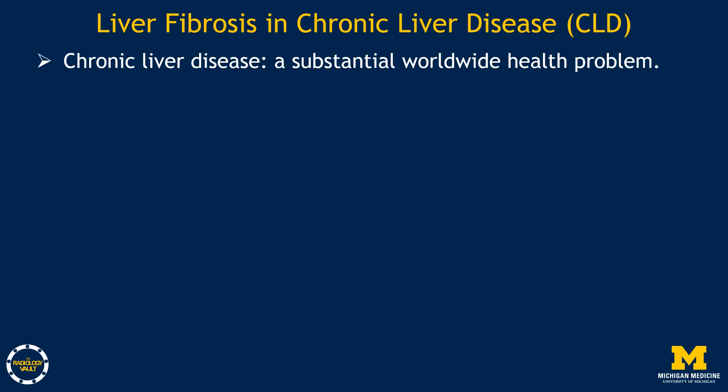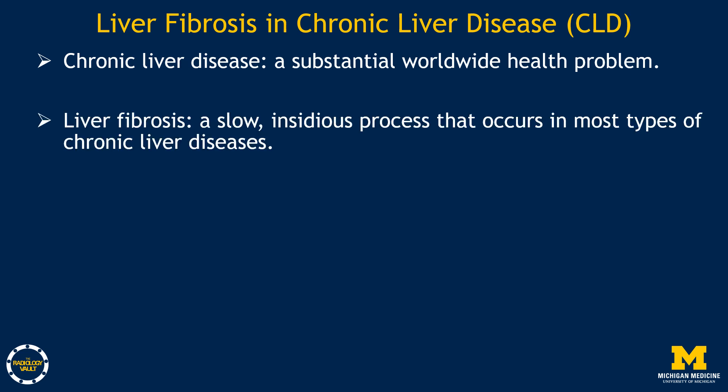Chronic liver disease is a substantial worldwide health problem, including chronic viral hepatitis B and C, metabolic dysfunction associated steatotic liver disease (MASLD), and metabolic dysfunction associated steatohepatitis (MASH), autoimmune liver diseases, and iron and copper overload. Liver fibrosis is a slow, insidious process occurring in most types of chronic liver diseases, resulting from persistent liver damage and a consequent wound healing process with excessive accumulation of extracellular matrix proteins in the liver.